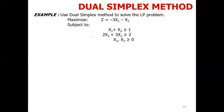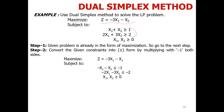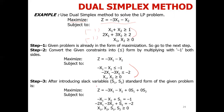We have a linear programming problem — already a maximization case. This is the objective function with its Z value. Both constraints are in greater-than form, so for both constraints we will multiply by minus one to get the less-than-or-equal-to form. We have multiplied both sides accordingly.